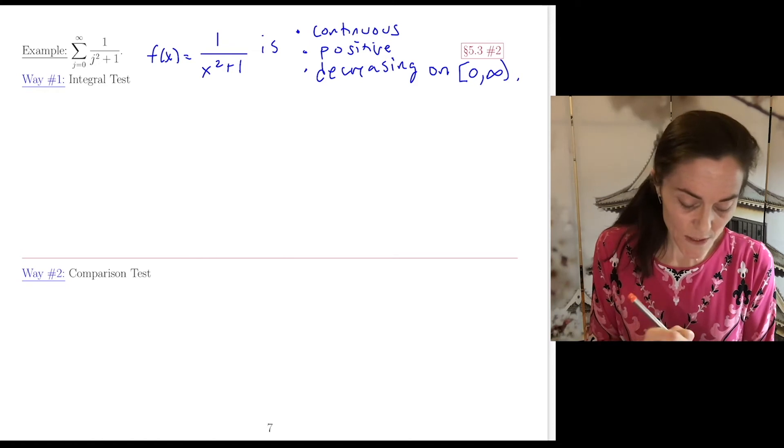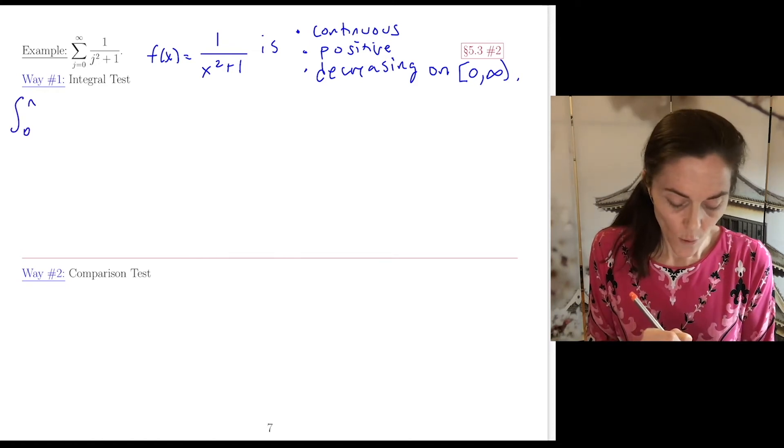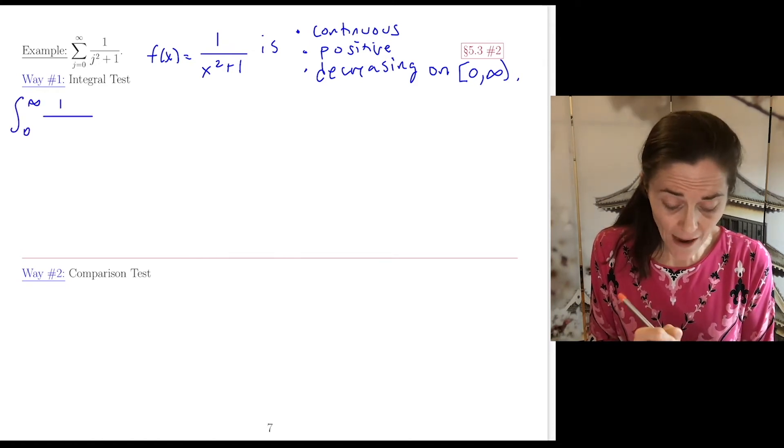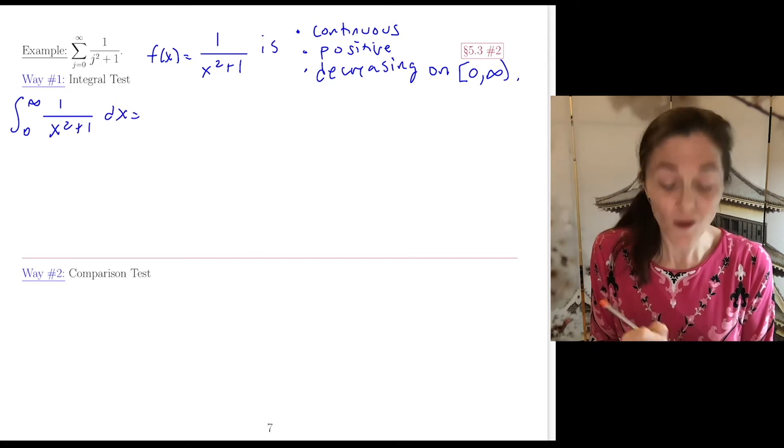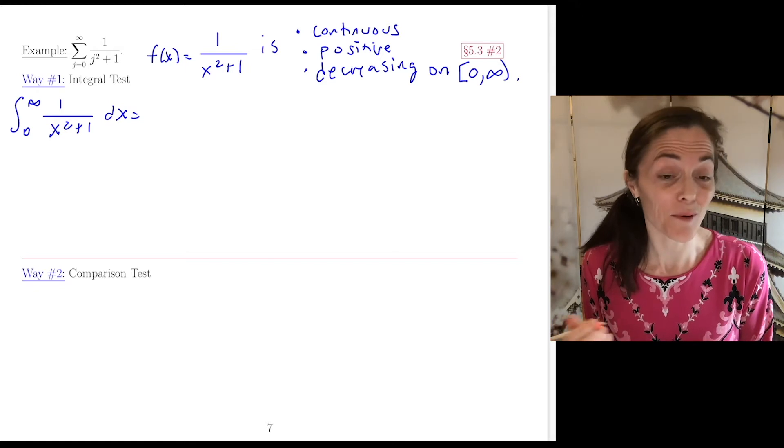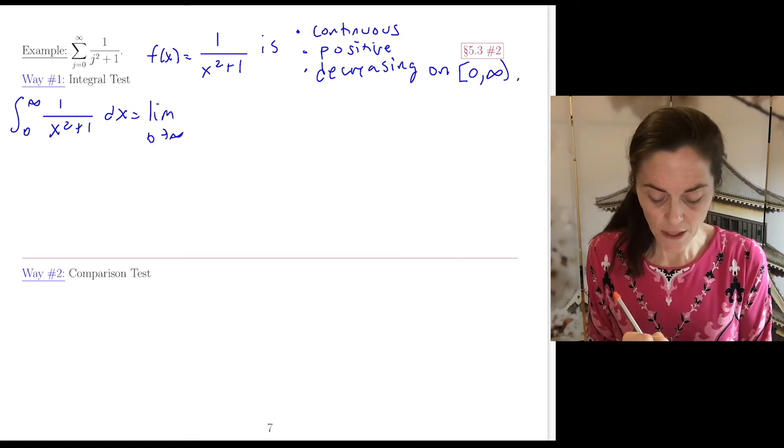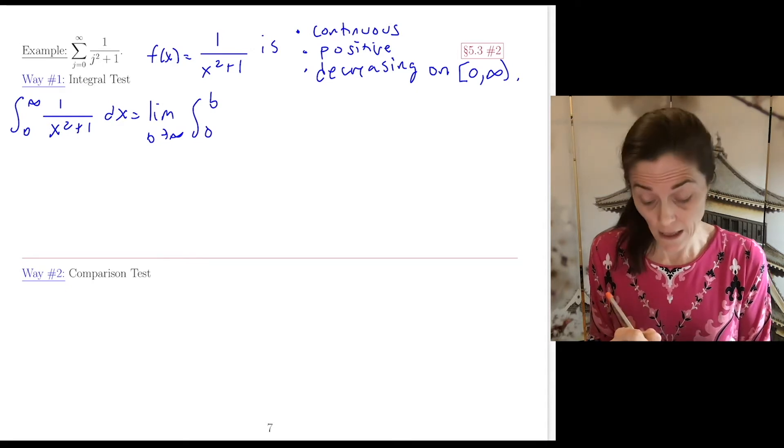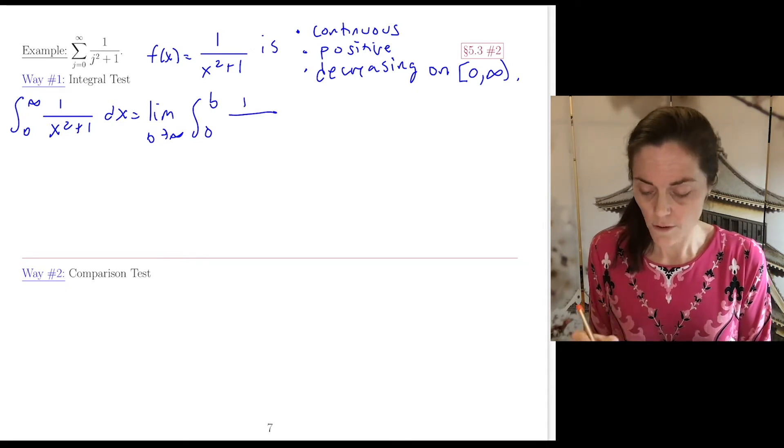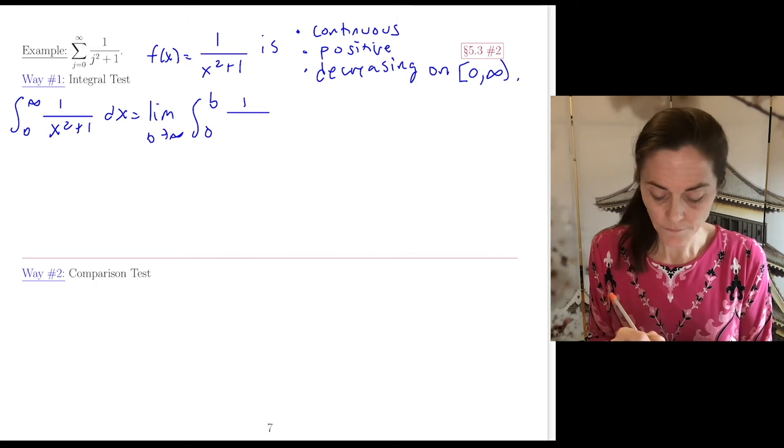So we may use the integral test to figure out if this series converges or diverges by calculating an improper integral. This, by definition, is the limit as b goes to infinity of the integral from 0 to b of 1/(x²+1) dx.